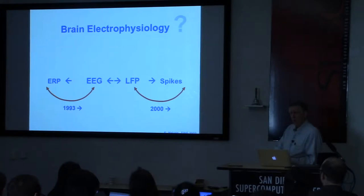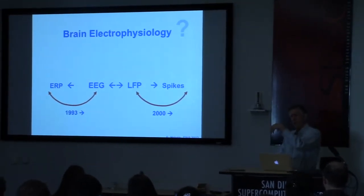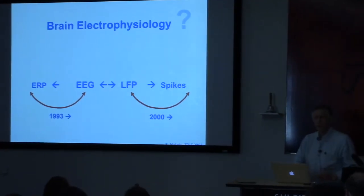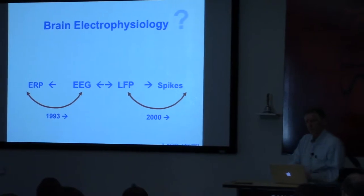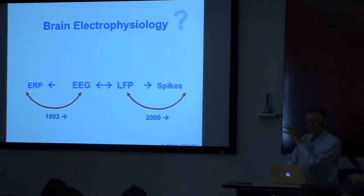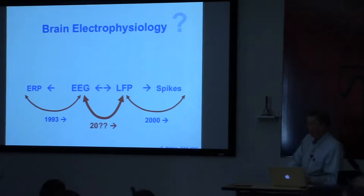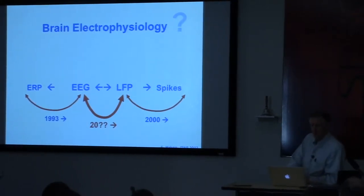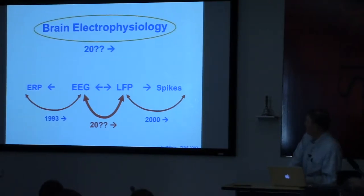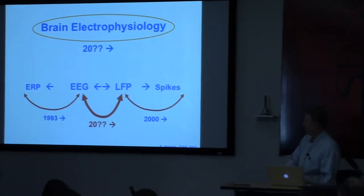We started seeing that the local field potentials that neurophysiologists recorded, and then didn't ignore mainly—they just used it to extract the spike counts—that there's a lot of interesting interplay between local fields and spikes in cortex. Those two subfields have become more unified. That leaves the gap between EEG and local field potentials, something for which ground truth doesn't yet fully exist.